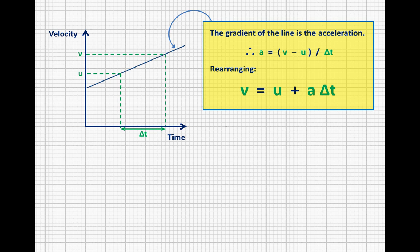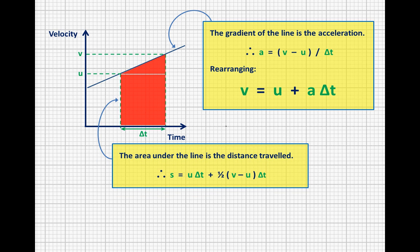Our second equation of motion also comes from the graph, as we remember that the area under a graph is the distance travelled. This is represented by our variable s, and it's the area of this trapezium, which we can break down into a triangle and a rectangle. The rectangle is nice and easy, it's this distance u multiplied by this distance delta t. So we end up with this expression here.